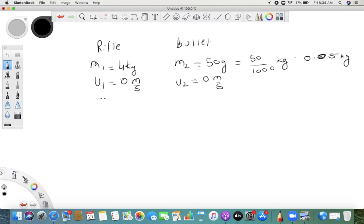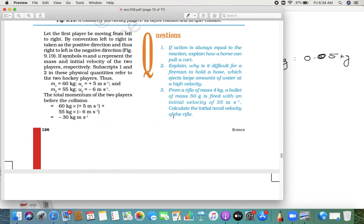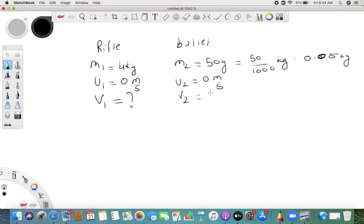The final velocity, the recoil velocity, we need to find out. And this is given to us: when you fire the gun, it goes with a velocity of 35 meters per second. So we use the law of conservation of momentum.